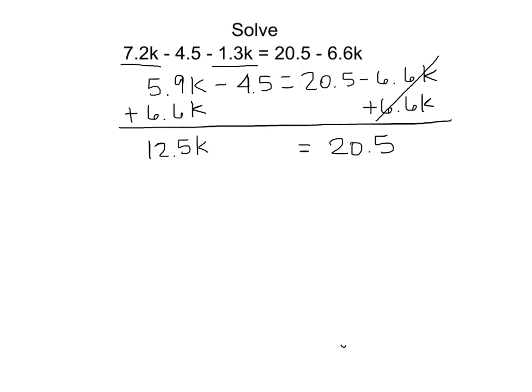And then I'm going to add 4.5 to both sides. Because again, I want numbers on one side and terms with a k on the other side. Negative 4.5 plus 4.5. Those are going to go away and become a 0. And I'll have 12.5k equals 25.